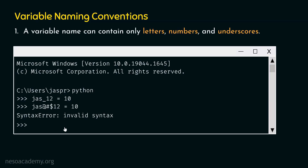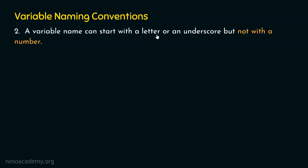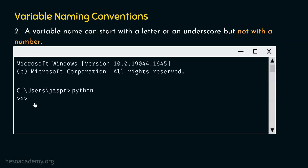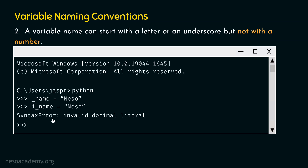Let's move on to rule number two. A variable name can start with a letter or an underscore, but not with a number. For example, if we type _name = 'Nesso', this is perfectly allowed. But if we type 1_name = 'Nesso' and hit enter, we will get a syntax error — invalid decimal literal — meaning we cannot start a variable name with a number.